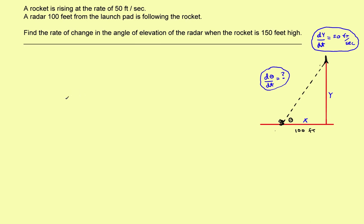You've got to figure out which trig function to use to solve this. In this case, here's a right triangle. This is the opposite side, and this is the adjacent side. Since I know opposite and adjacent, I'm going to use the tangent. So the tangent function gives us: tan(θ) = y over x.